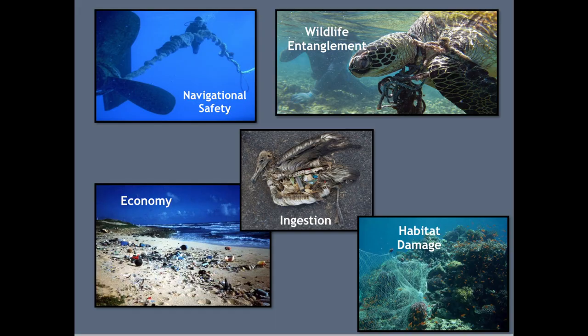Poll question: what is an example of marine debris — fishing line, an oil spill, or fossil fuels? The answer is fishing line. The other two aren't marine debris because they're liquid or gas products. Marine debris must be a solid material. Fishing line is probably one of the number one debris items found because irresponsible fishing leaves nets and line in the water.